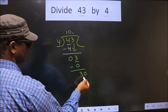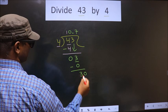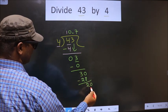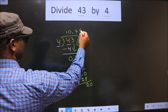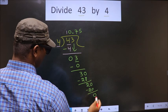Now here we have 30. A number close to 30 in 4 table is 4 7s, 28. Now you subtract you get 2. When do we get 20 in 4 table? 4 5s, 20. Now you subtract you get 0.